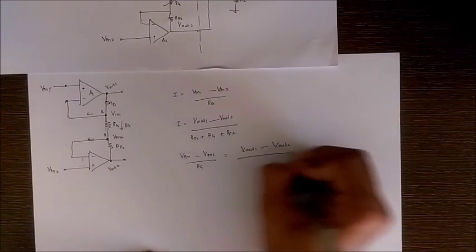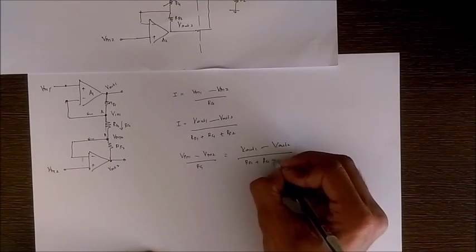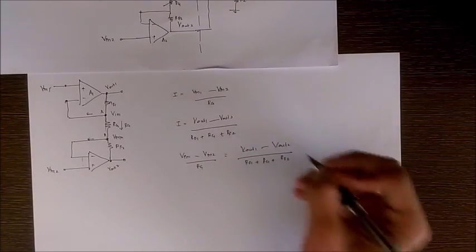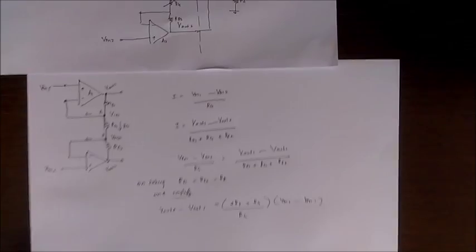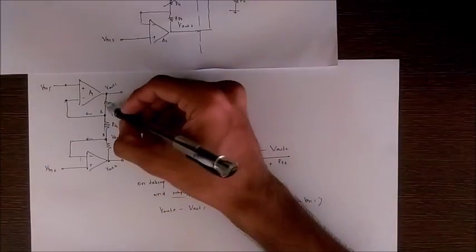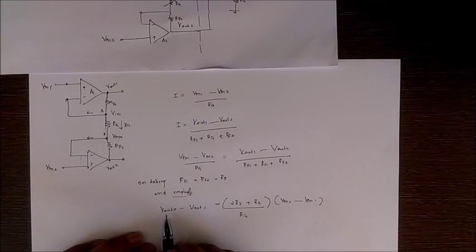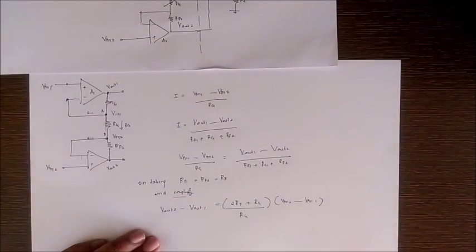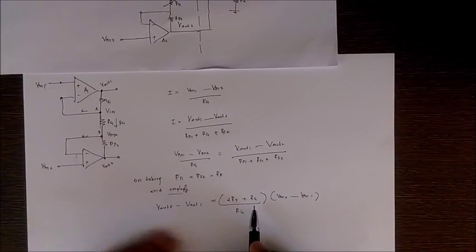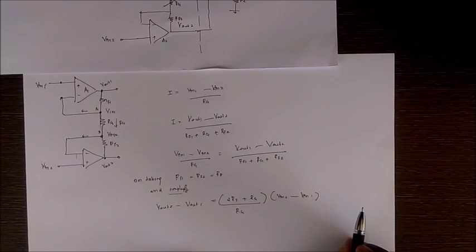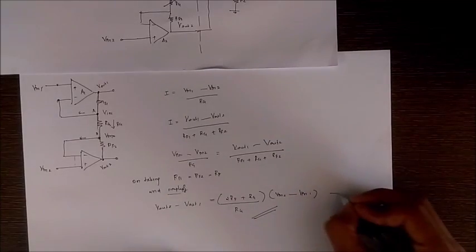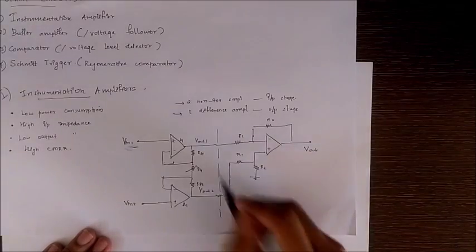On equating these, we get (Vin1 - Vin2) / RG = (Vout1 - Vout2) / (RF + RG + RF). Assuming R1 and RF2 are equal to some RF, and simplifying, we get: (Vout2 - Vout1) = ((2RF + RG) / RG) × (Vin2 - Vin1). This is equation one.